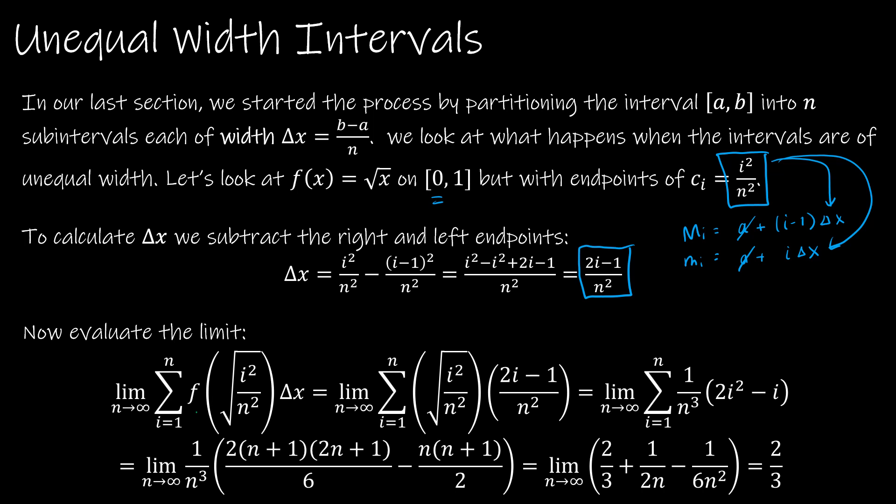So this is the left and the right endpoints, which again, that interval is going to be getting smaller. But what we're going to do is we're going to do the same process we did before. We're going to find the limit as n approaches infinity of the summation as i goes from 1 to n of the function value, which is the square root of x. So we're going to use the square root of our x value, i squared over n squared, and then our delta x, which is 2i minus 1 over n squared. So I'm not going to go through that math step by step, because we did that in our last video a lot.